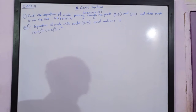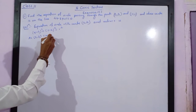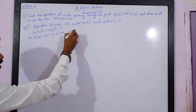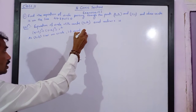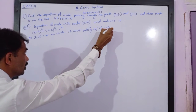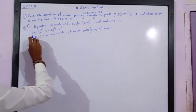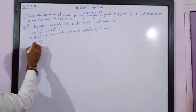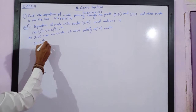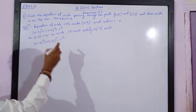Now, since point (2, 3) lies on the circle, it must satisfy the equation of the circle. So substituting, we get: (2 minus h) bracket squared plus (3 minus k) bracket squared is equal to r squared. This will be Equation 1.